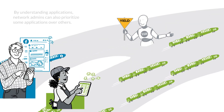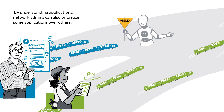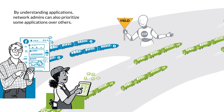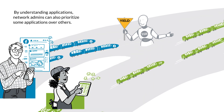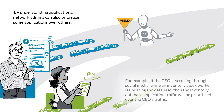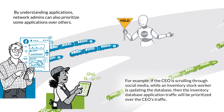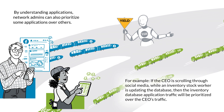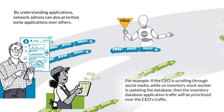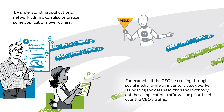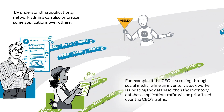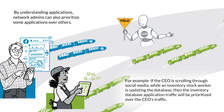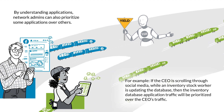By understanding applications, network admins can also prioritize some applications over others. For example, if the CEO is scrolling through social media while an inventory stock worker is updating the database, then the inventory database application traffic will be prioritized over the CEO's traffic.